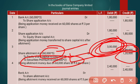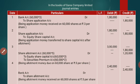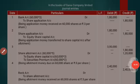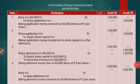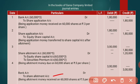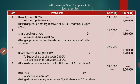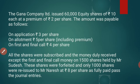The next stage is receiving the allotment money. The journal entry is: Bank Account Dr to Share Allotment Account. The bank will receive 3 lakh rupees. This completes the allotment stage.